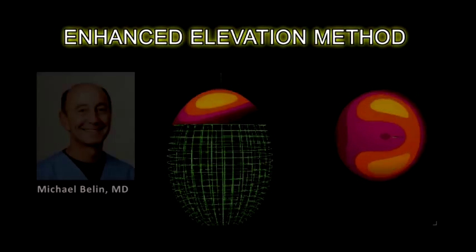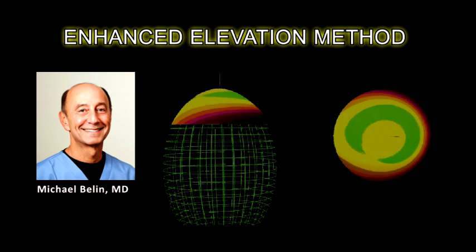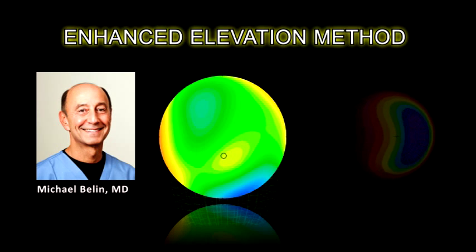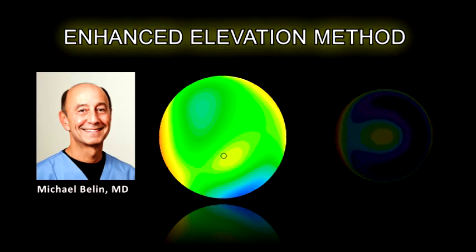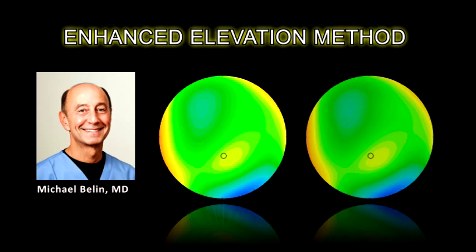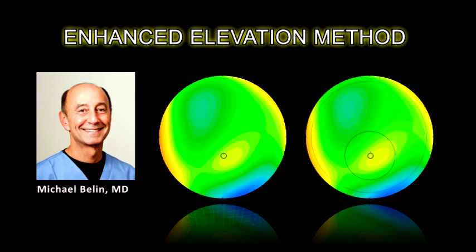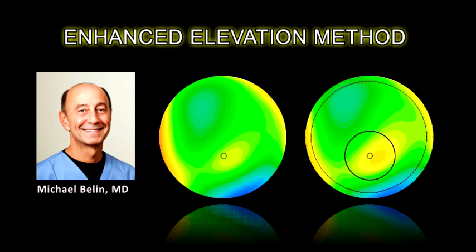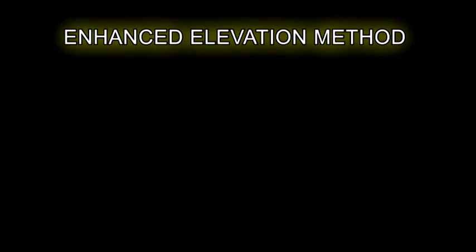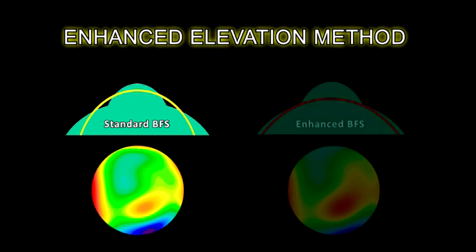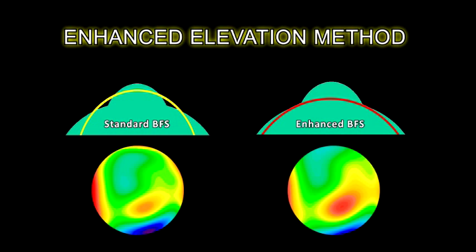An enhanced elevation method was described by Belin. After calculating the standard best fit sphere for the central 8mm zone, a second enhanced best fit sphere is calculated for the same zone excluding the 3.5mm diameter zone centered at the thinnest corneal point. The difference map from the standard and the enhanced best fit sphere will exaggerate any protrusions within the excluded zone.